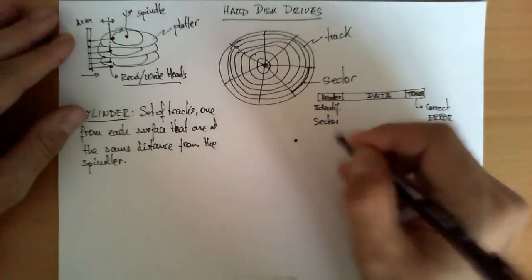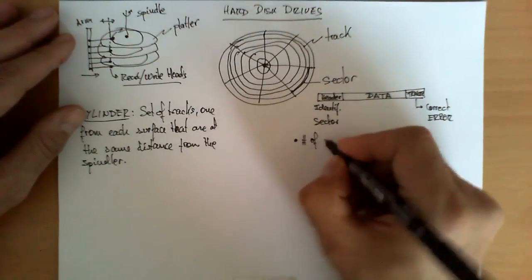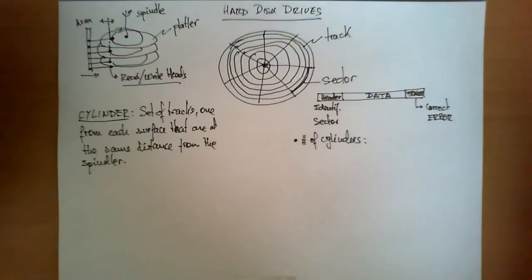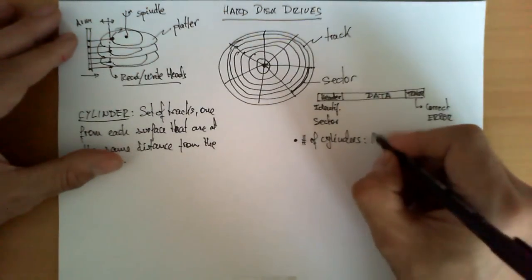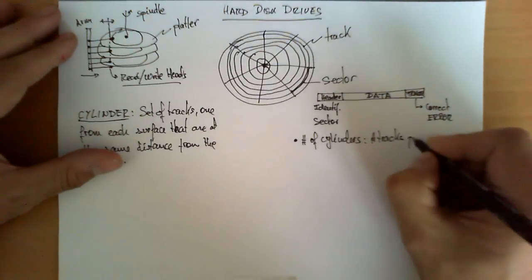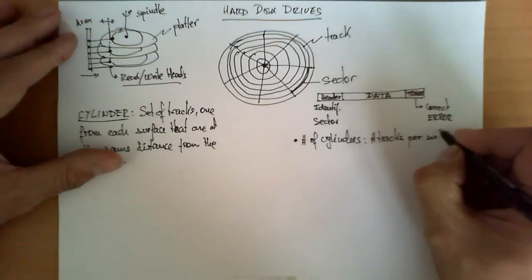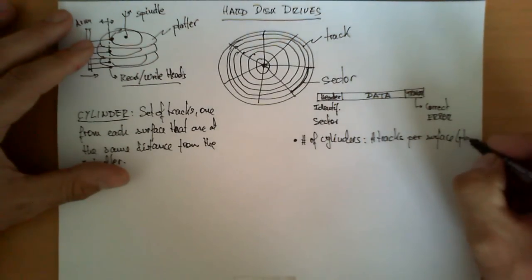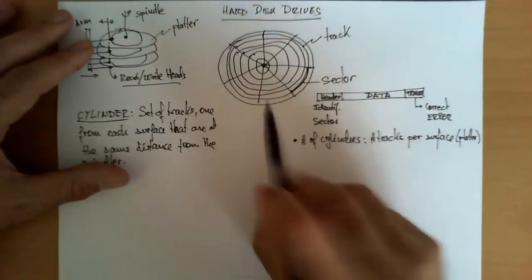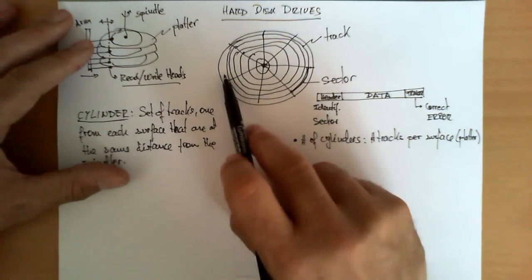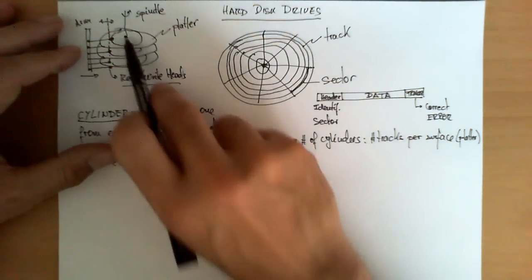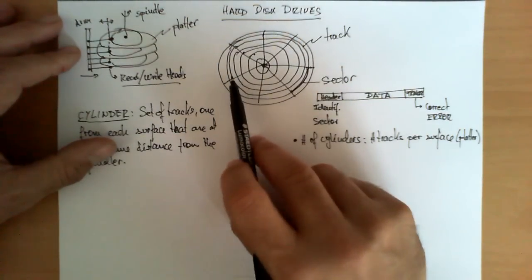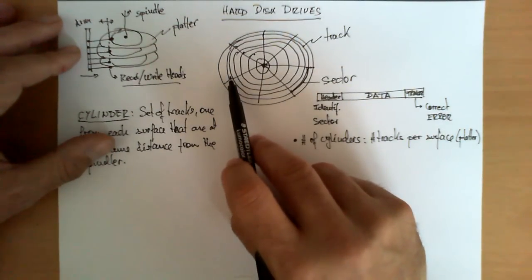So the first parameter worth studying is the number of cylinders in a disk, and this is typically directly related to the number of tracks per surface, or the number of tracks per platter. In other words, if I look at this platter and I see there are ten tracks here, then when I put all three of these platters here, or all six surfaces, then I will have ten cylinders, and I can refer to them like cylinder zero to cylinder nine.